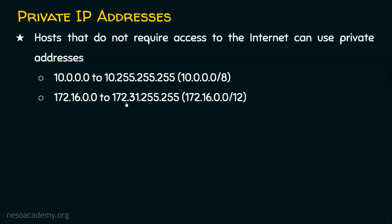We have a Class B private IP address range which is 172.16.0.0 to 172.31.255.255. We cannot say that anything starting with 172 is a private IP address — please note it is specifically 172.16 to 172.31. So 172.16.0.0 is the network address, the starting address of the network, and we are using slash 12 notation. In the classful world we have seen slash 8, slash 16, and slash 24, but here we see slash 12, which we will cover elaborately in the classless addressing part.